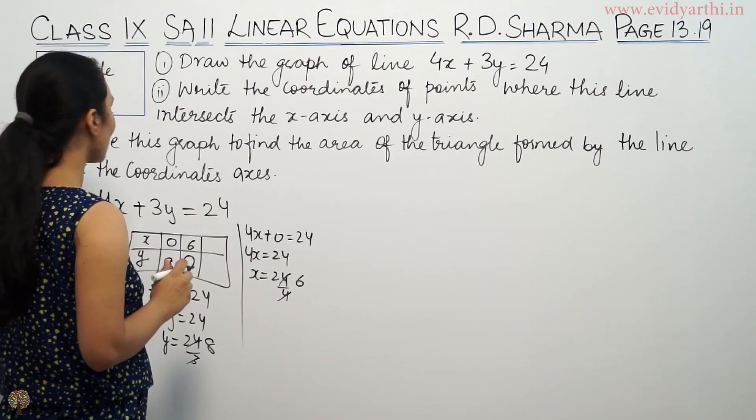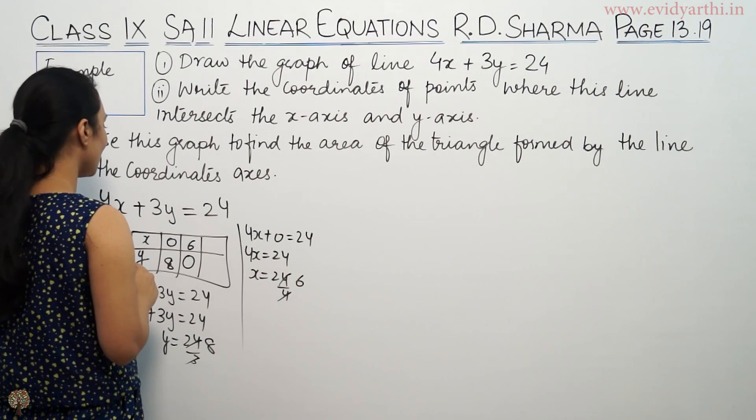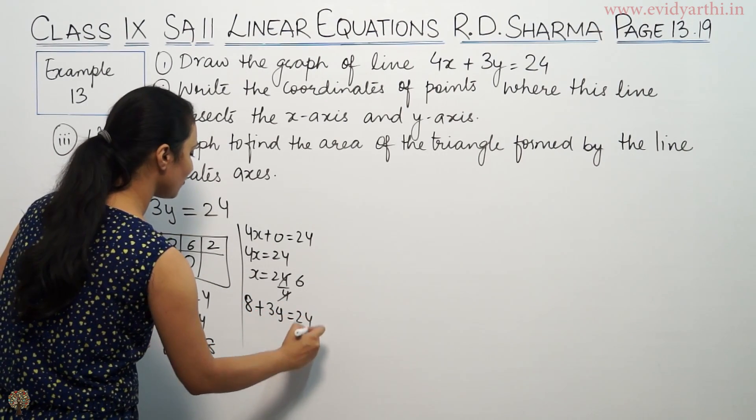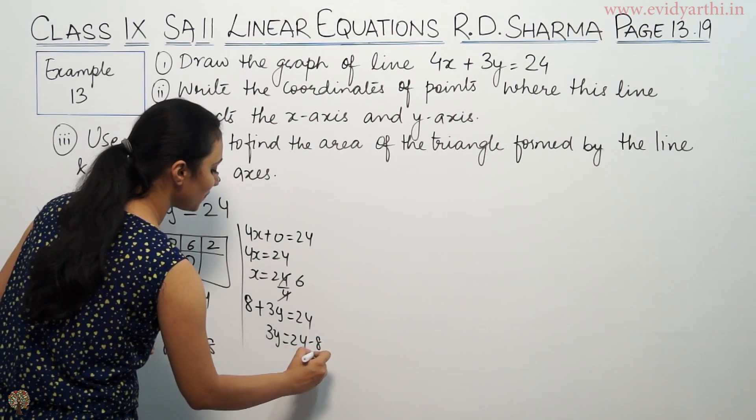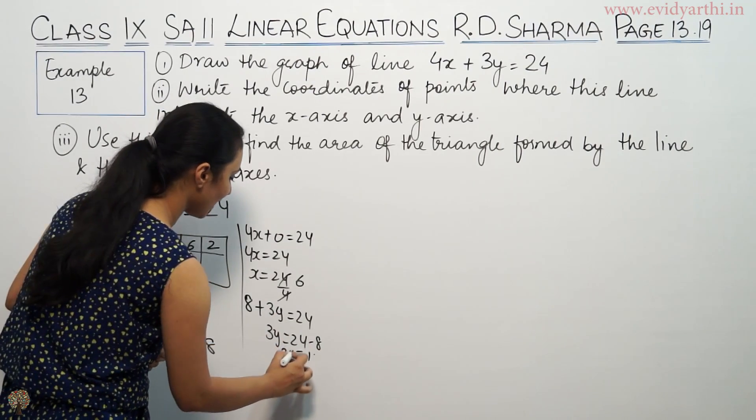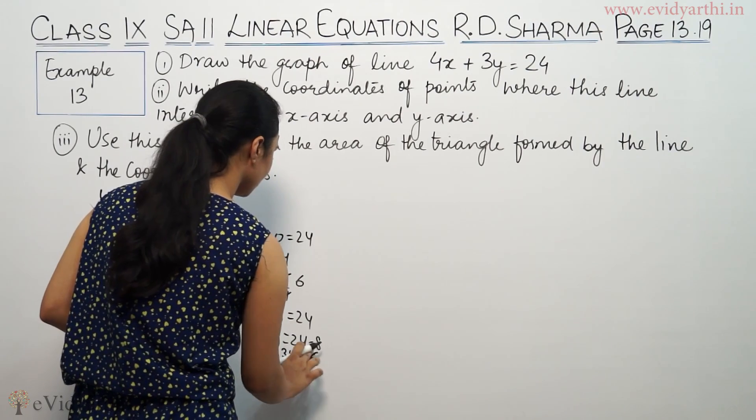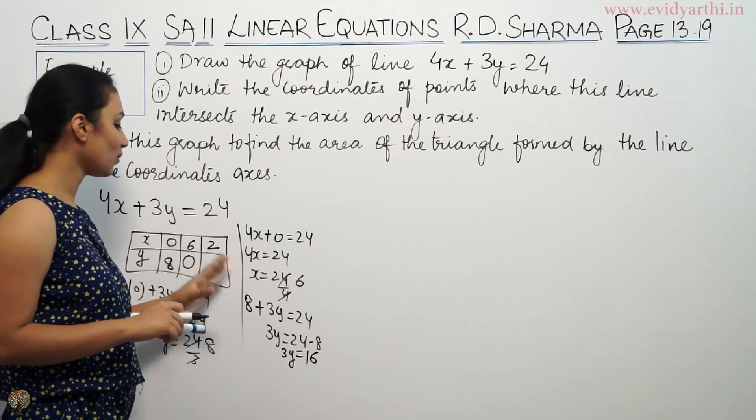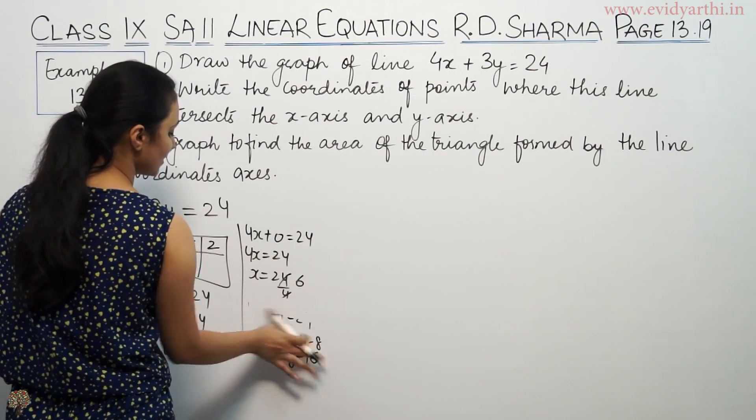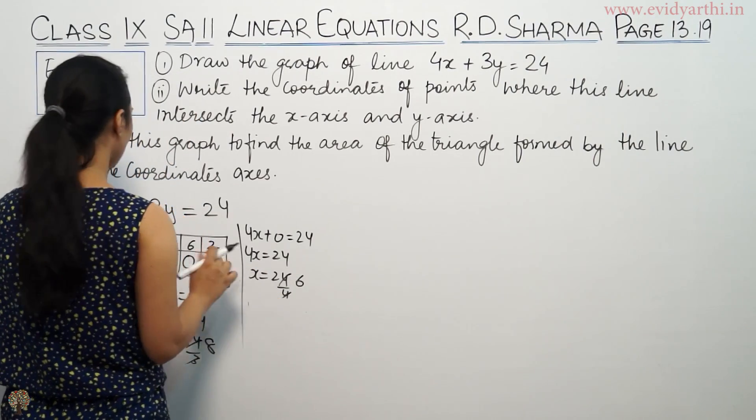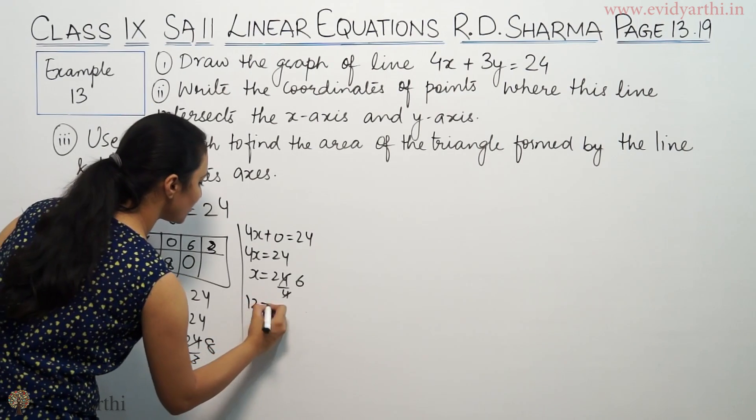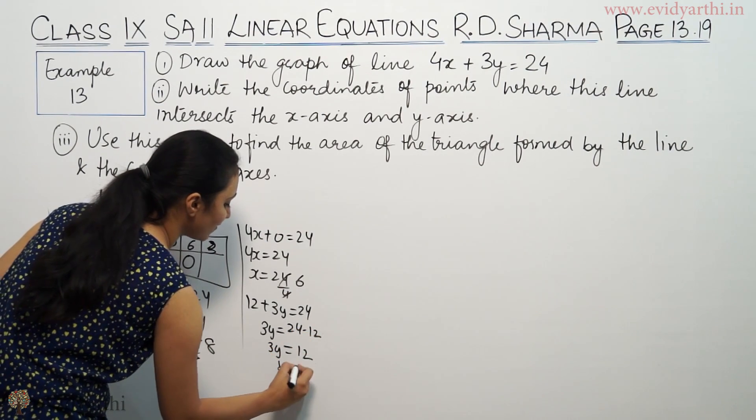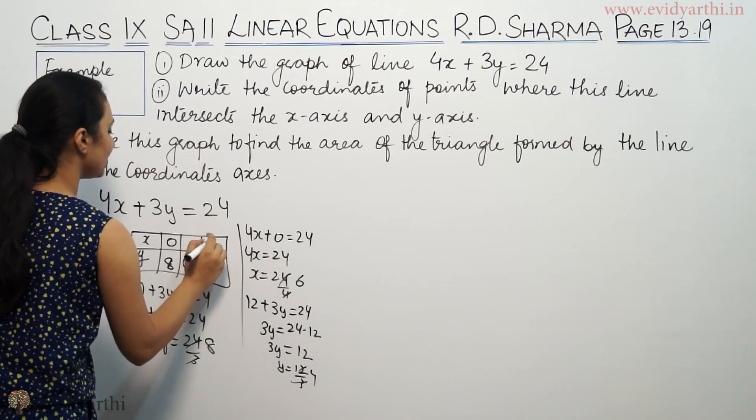If we put x equals 3, then 4 times 3 is 12 plus 3y equals 24. So 3y will be 24 minus 12, which equals 12. So y equals 4. When x is 3, we get y equals 4.